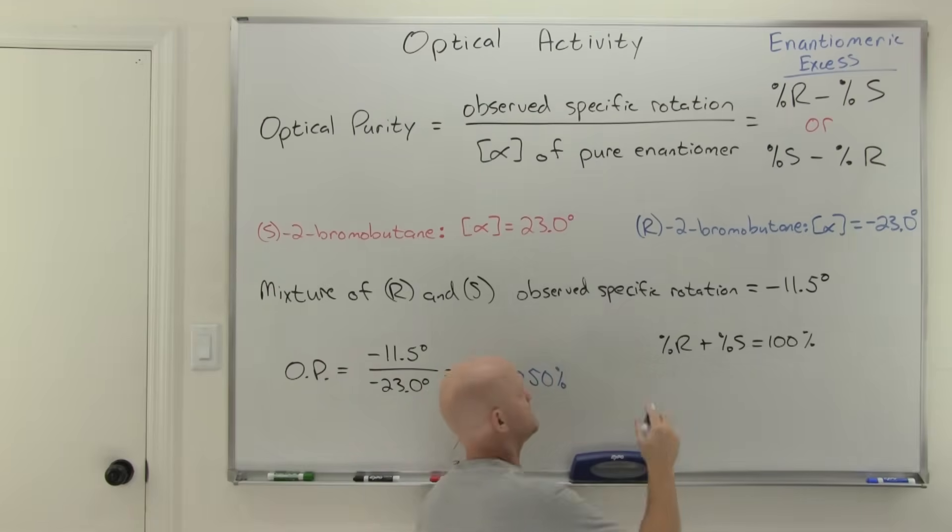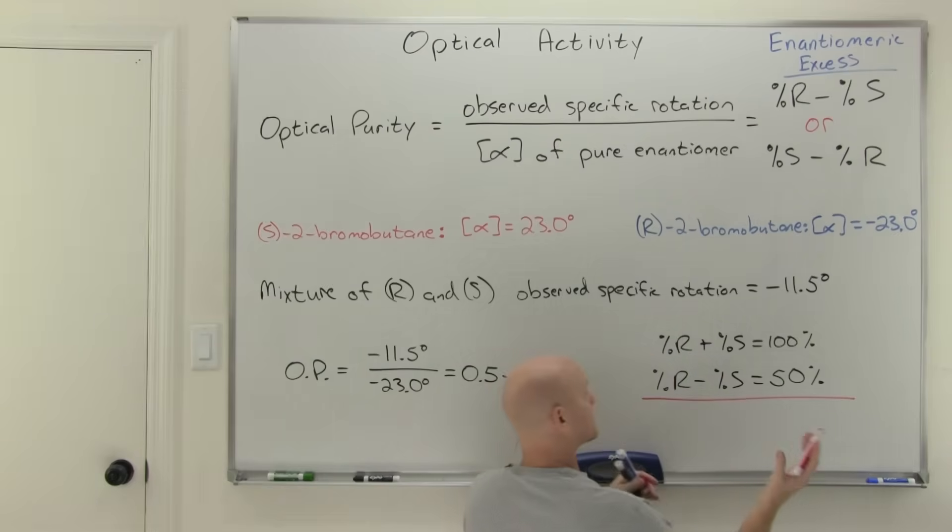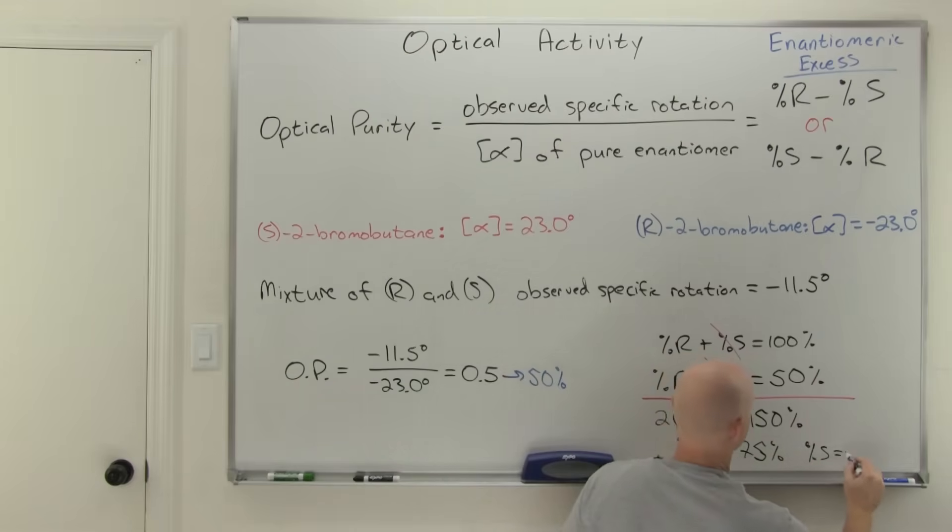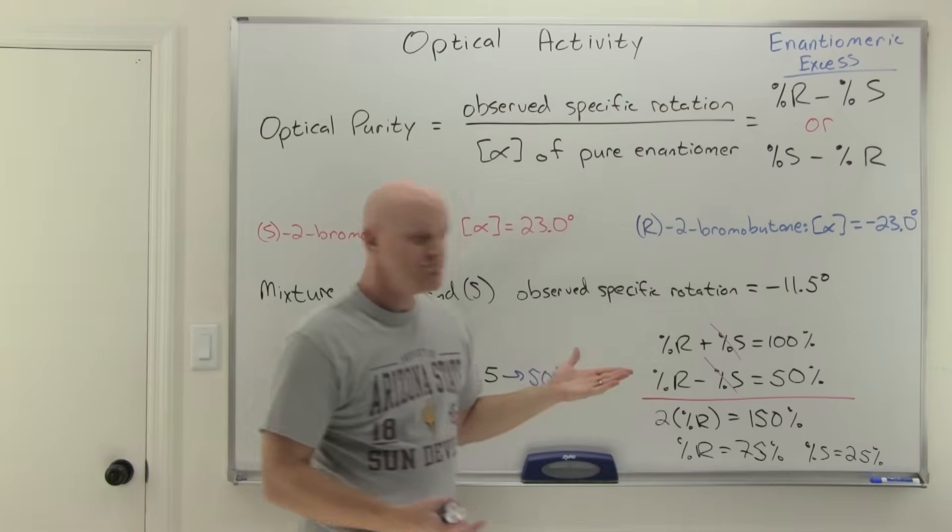So our optical purity means that our enantiomeric excess is also 50%. There's 50% more in this case R than S. And so we can figure this out then because we know that the percent R plus the percent S has to add up to 100%. But now we know that the percent R minus the percent S equals 50%. And now we have two equations with two unknowns. If you just add these together, notice the percent S are going to cancel. And so you end up with two times the percent R is going to add up to 150%. And we find out that our percent R, when we solve for it, divide by two equals 75%. And if the percent R is 75%, the percent S must have been the rest. So 25%. And so we can see they added up to 100%. And there's 50% more R than S because 75% minus 25% is 50%.